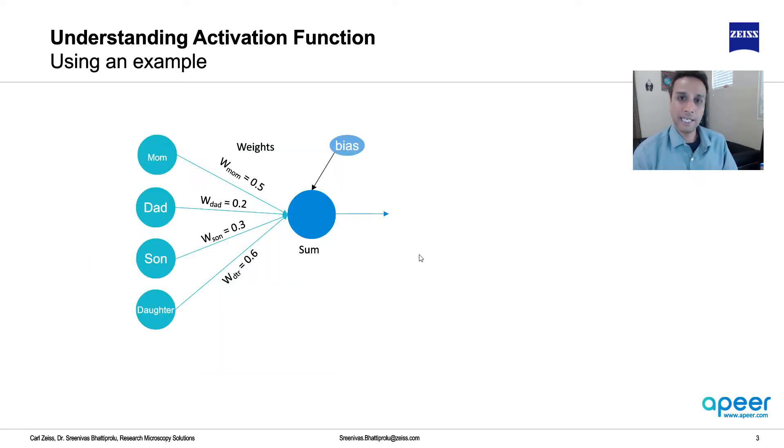Now let's take this to a specific example that we hopefully all of us can relate to. Let's say there is a family of four, mom, dad, son, and daughter, and each of them come with certain weight in terms of how much their opinion is valued in their household in terms of making a decision. In this example, the mom has 50 percent or 0.5 weight, dad has 0.2 less weight, and son has 0.3, a bit less than mom but higher than dad, and daughter has 0.6 weight, the highest weight of all of these.